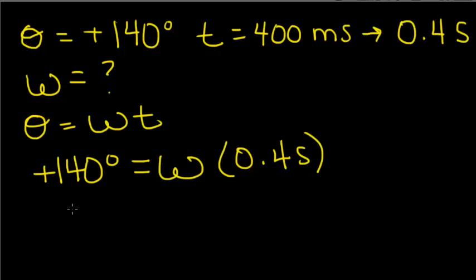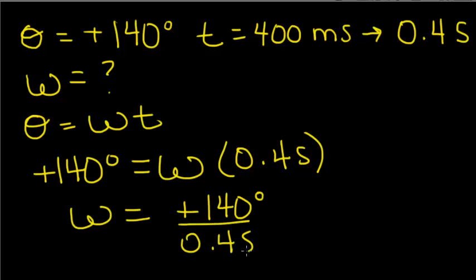After rearranging, we can find the angular velocity by dividing 140 degrees by 0.4 seconds. Once we do that, we have a positive 350 degrees per second.